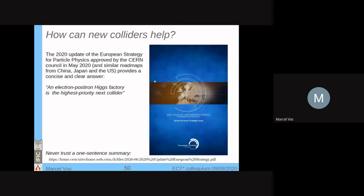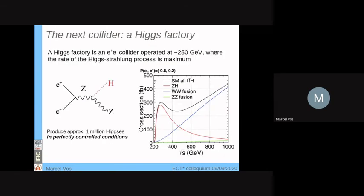There are plans for new colliders. We had a long process to update the European strategy for particle physics, and similar roadmaps were drafted in China, Japan, and the US. The outcome of a long discussion is a quite concise and clear answer. What we need in high energy physics is an electron-positron Higgs factory as the next collider. That's the highest priority. It was not easy to reach consensus among scientists. It never is. But this one, everyone seems to agree on. Now, it's a bit more complex than that. You should never trust a one-sentence summary of a big political document. I've included the links you can see for yourself.